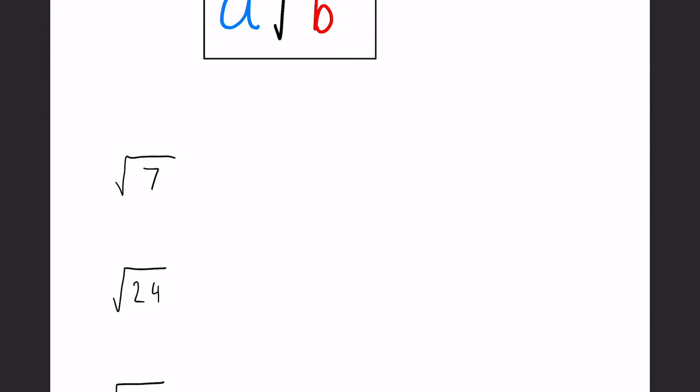So if we have a look at the first one we have √7. In some situations you will find that you can't simplify. In this case 7 would be one of those, so we leave it as it is.